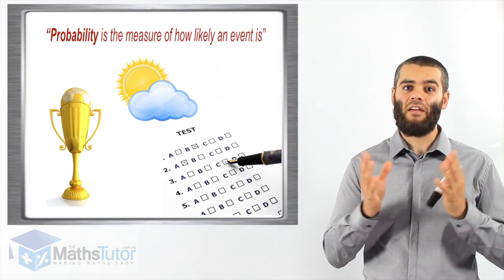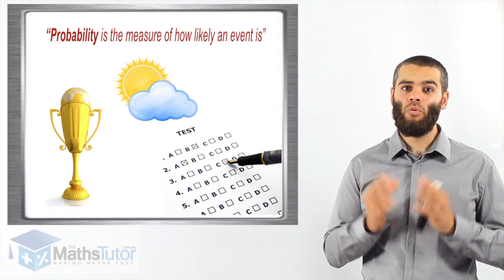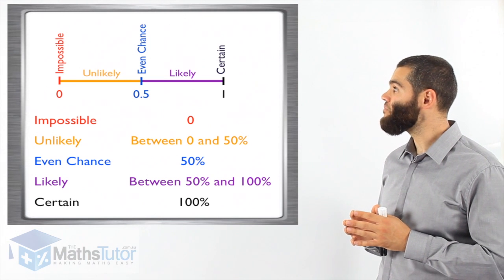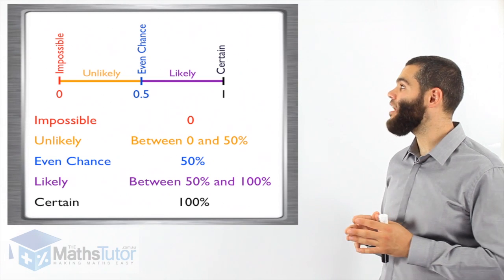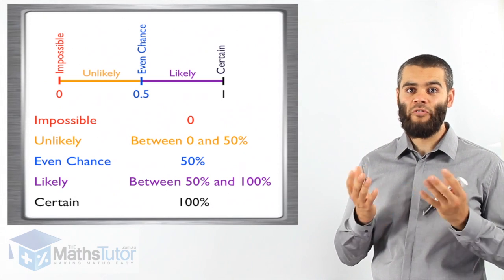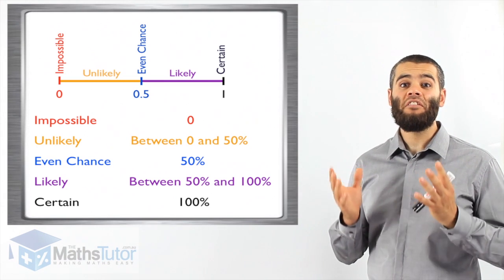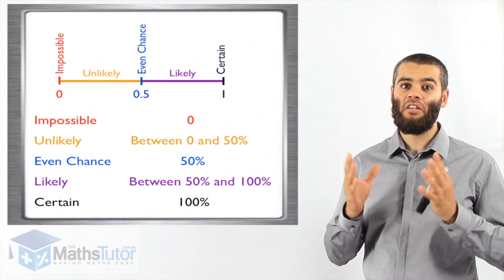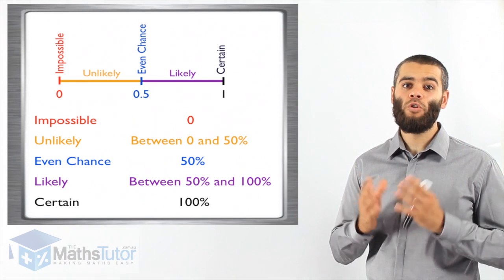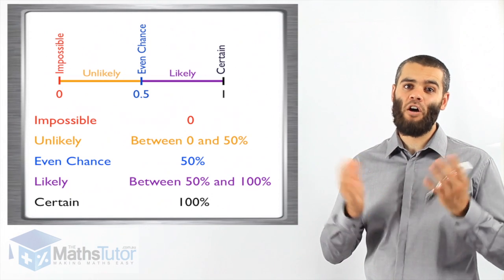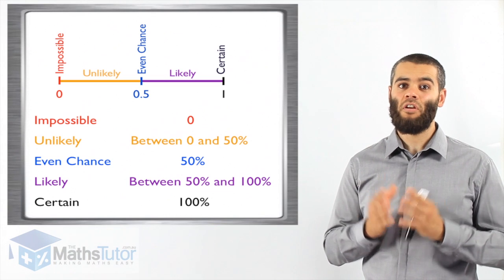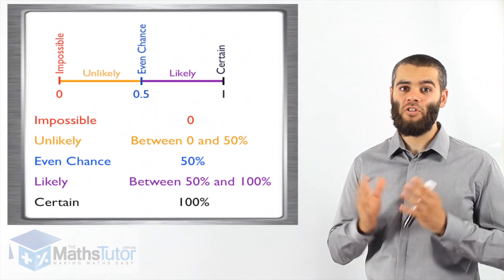Let us look at the line, the scale that we use when we're measuring probability. We can see that this scale starts from zero and ends at one. One meaning a hundred percent. Zero, we refer to it as nothing, as in, it is impossible for that event to happen. So zero, there's no way it's going to happen. An example of that would be a human living without oxygen. It is an impossible event for that to happen. So we say it is impossible. The chances are zero.